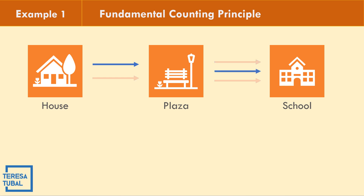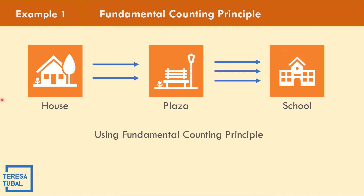If we list the routes one by one: from the house via the first route to the plaza, we have three ways to school — first, second, and third route. From the house via the second route to the plaza, we again have three ways to school. That gives us six ways total. Using the Fundamental Counting Principle: two ways from house to plaza times three ways from plaza to school equals six possible ways.